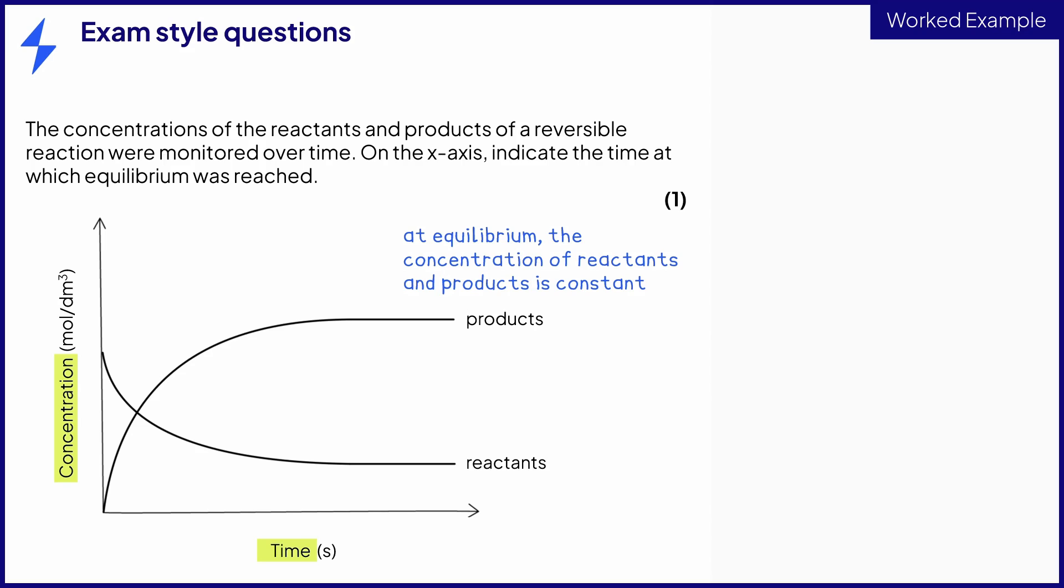The best way to mark this would be to use a ruler and draw a vertical line from the point on the curves where they become horizontal down to the x-axis, although you don't need to show the line passing through the reactants and products to gain the mark.